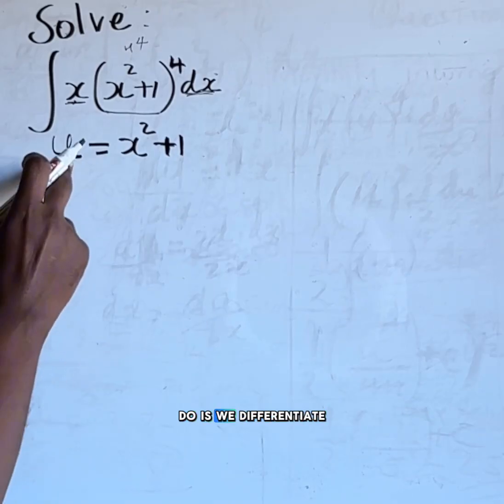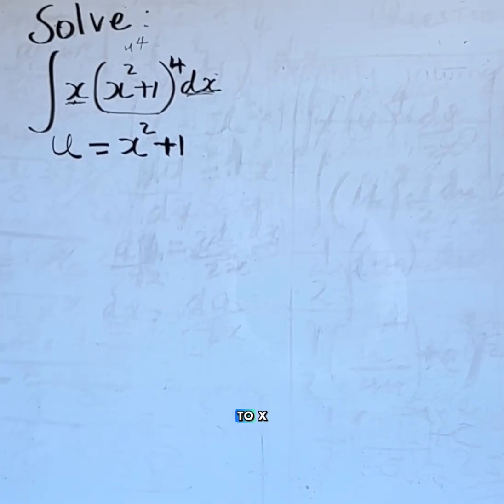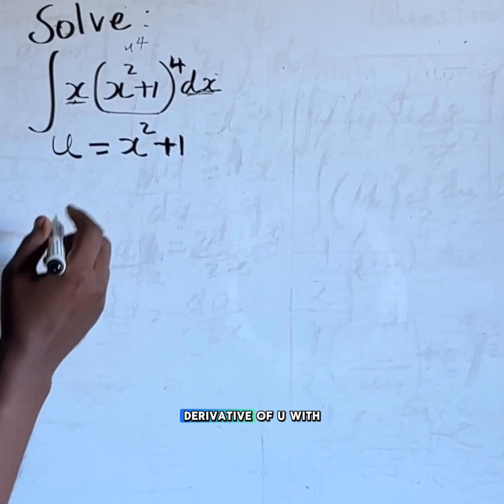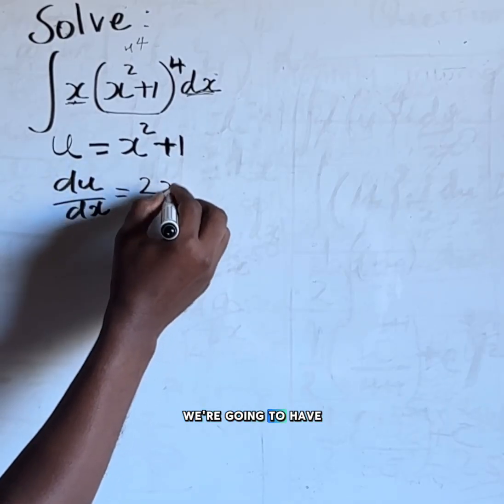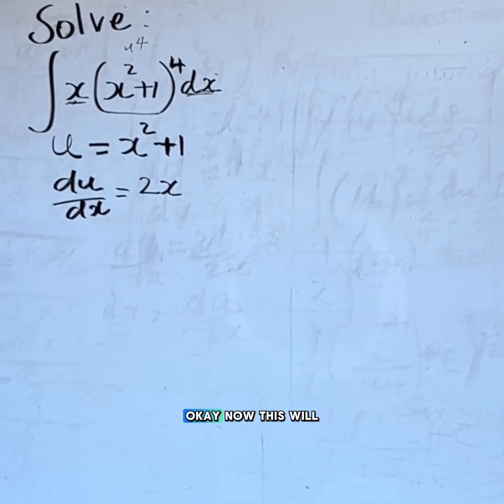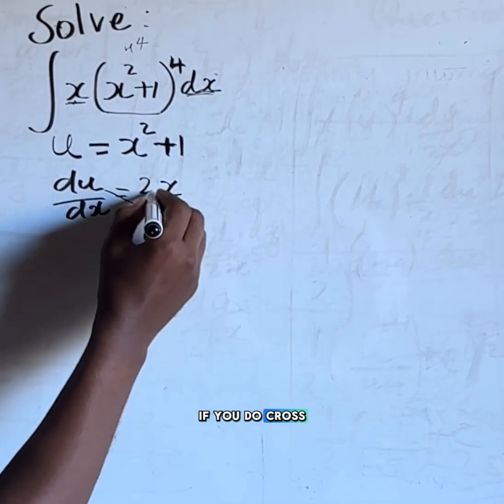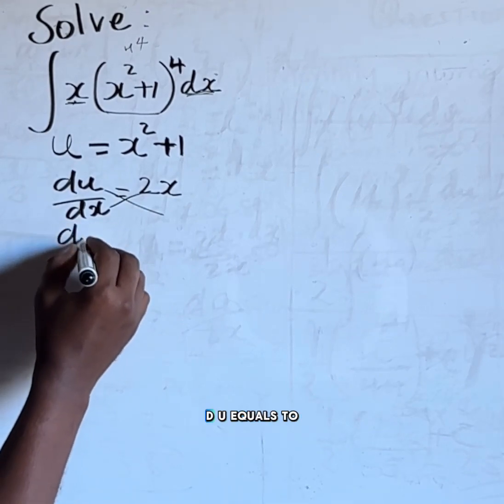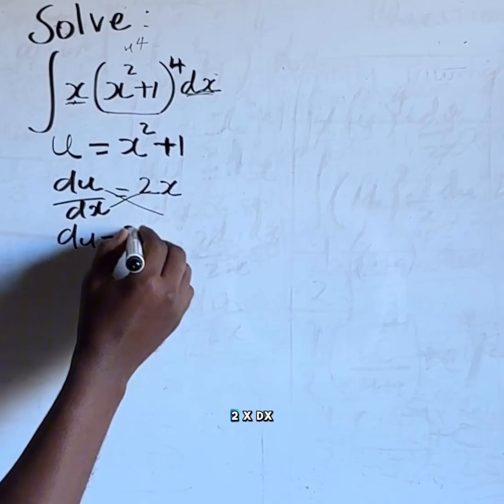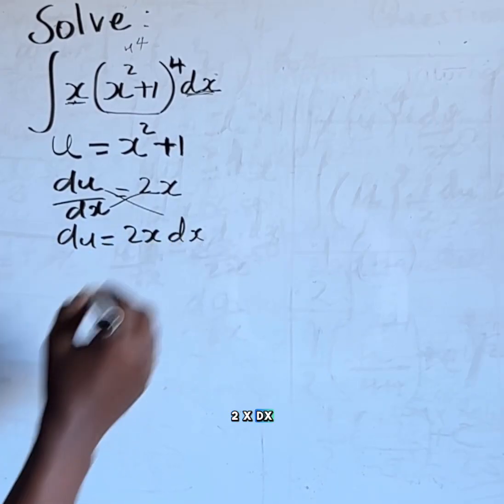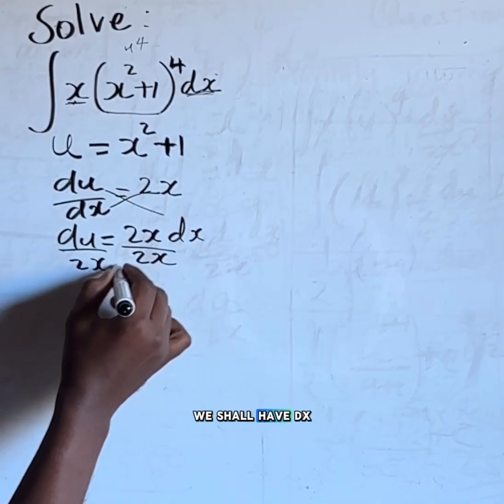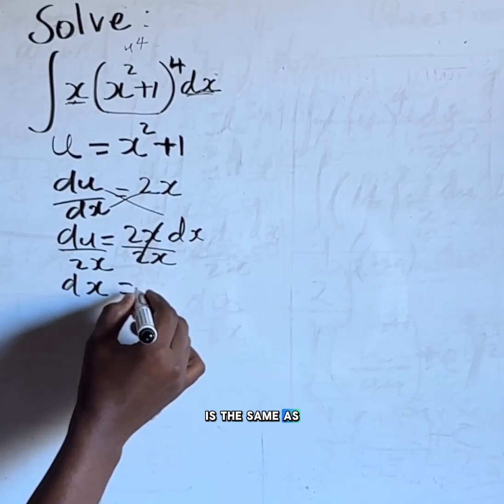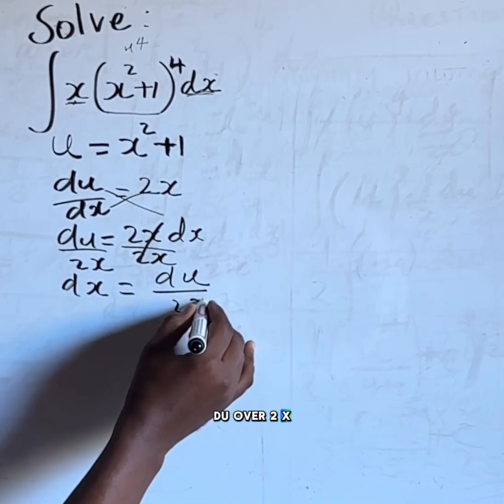So what we do is we differentiate this u with respect to x. We find the derivative of u with respect to x. If you differentiate this we get 2x. Now if you do cross multiplication we have du equals 2x dx. But if we divide both sides by 2x we shall have dx is the same as du over 2x.